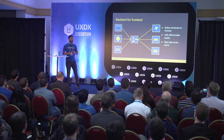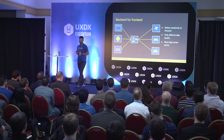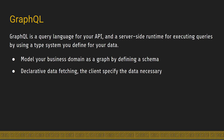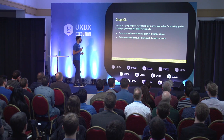We can unify data models between the different microservices, and if you have different clients you can reuse this business logic across your Android or iOS applications. A perfect match for this is GraphQL. GraphQL is a query language for your API. It models your business domain as a graph, you define a schema, and it uses a very powerful declarative data fetching approach. The client directly specifies what is necessary for it.